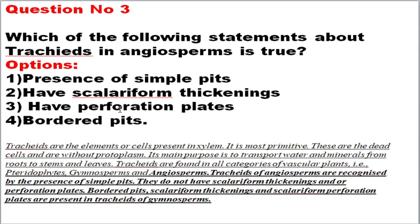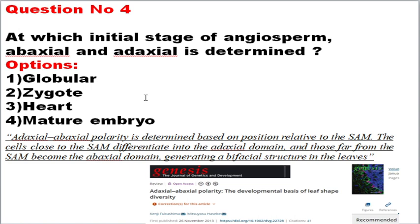In angiosperms, tracheids are recognized by the presence of simple pits, and they don't have any scalariform thickening or bordered pits. Whereas in gymnosperms, tracheids don't have simple pits but do possess scalariform thickenings and bordered pits. The correct answer is the presence of simple pits, because in angiosperms they don't have any thickenings, preparation plates, or bordered pits.